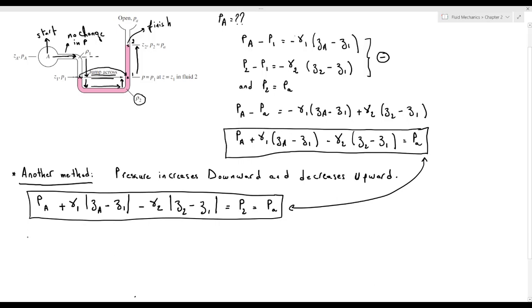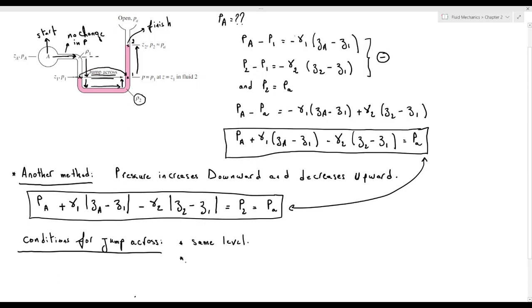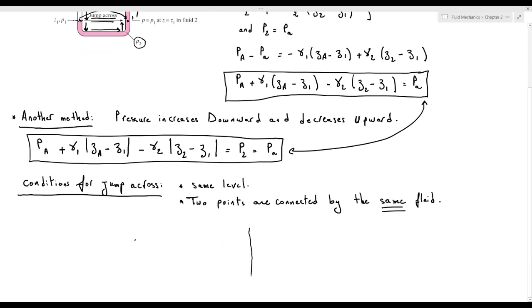We should know that in order to apply the jump-across, we need two conditions. First, the two points should be at the same level. Second, the two points should be connected by the same fluid. Both conditions must be verified together in order to apply the jump-across.